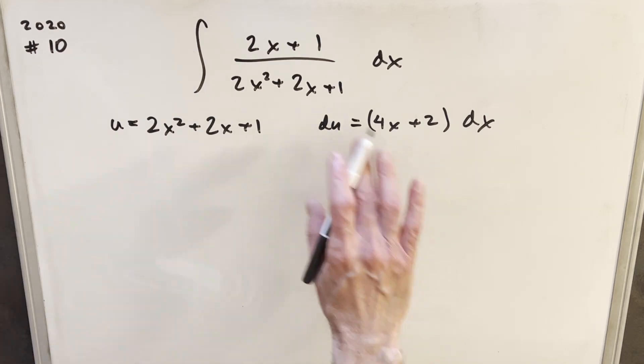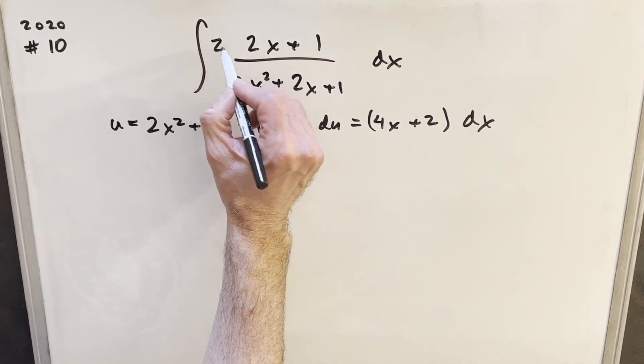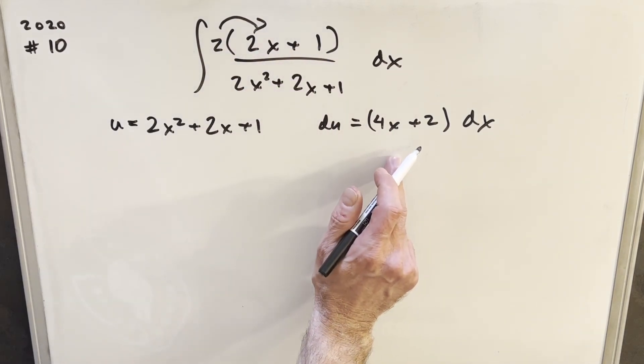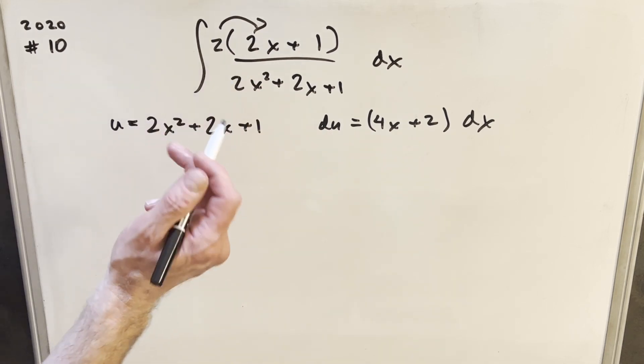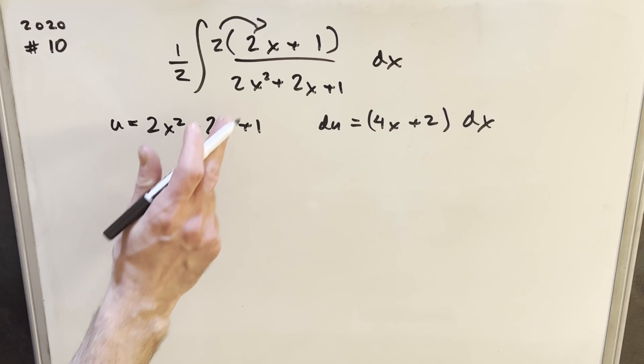This du value doesn't match our numerator exactly, but what you'll notice is if we just multiply this numerator by 2, distribute that in, we end up with 4x plus 2. Can't quite do that without changing the integral, so what we'll do is we'll bring a 1 half in front. And now we're set up pretty much perfectly for our u-substitution.